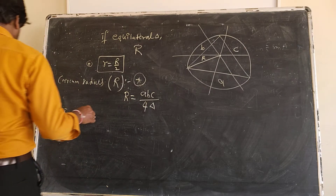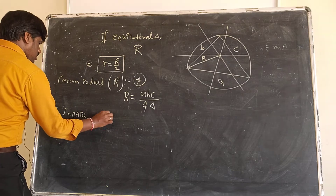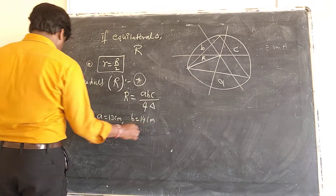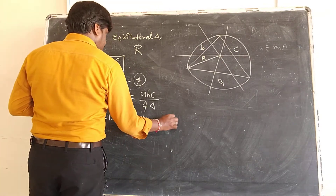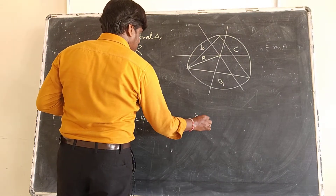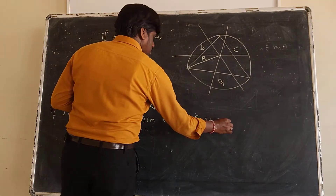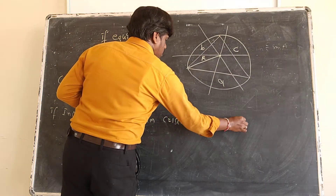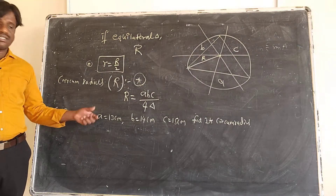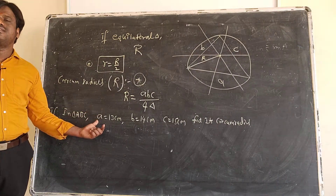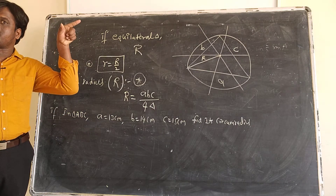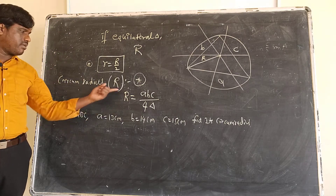Example: If triangle ABC has A = 13 cm, B = 14 cm, C = 15 cm, find its circumradius. Some questions which cannot be solved using straight lines can be solved using the solution of triangles.